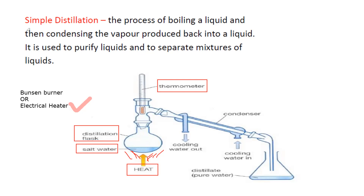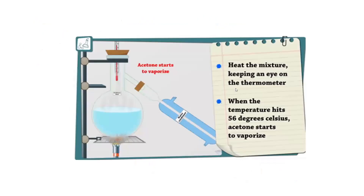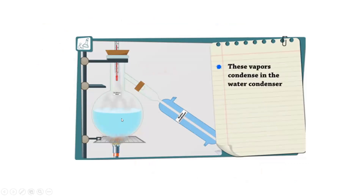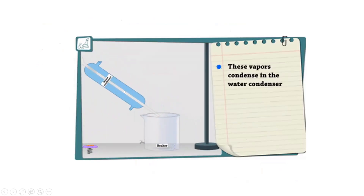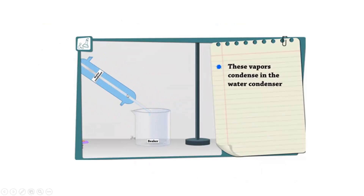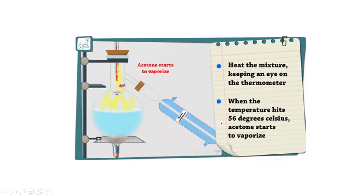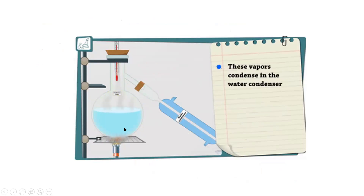The concept of simple distillation: the process of boiling the liquid and then condensing the vapors produced back into liquid state is used to purify the liquid from the mixture. When we supply heat energy, the liquid vaporizes; the condenser removes heat energy from the vapors, and we collect a sample of pure water.